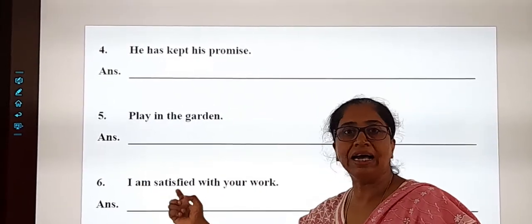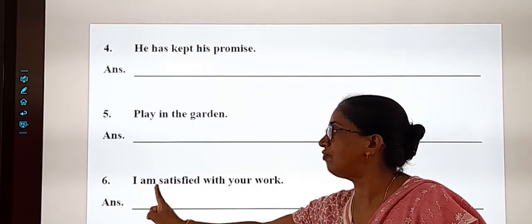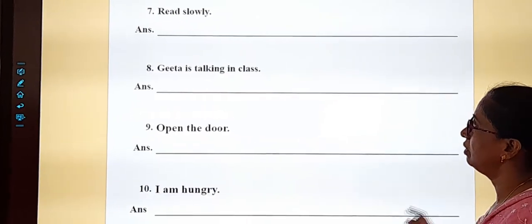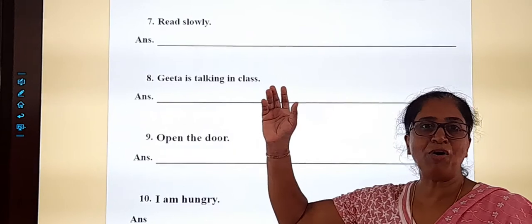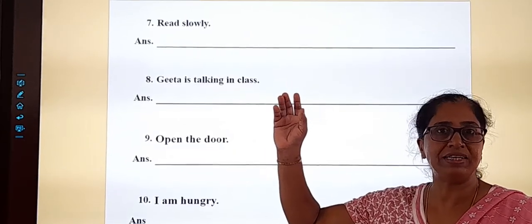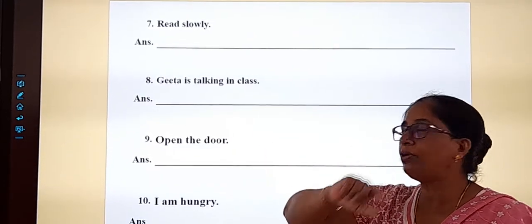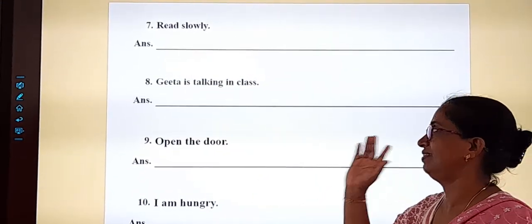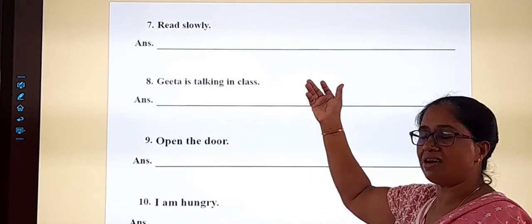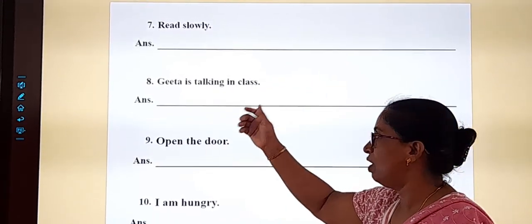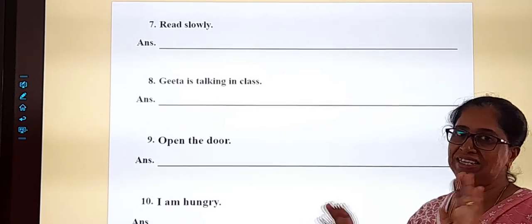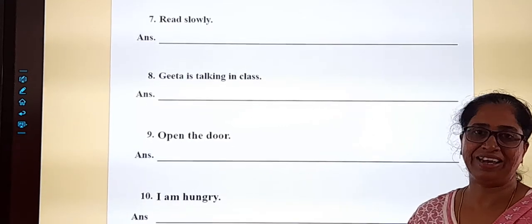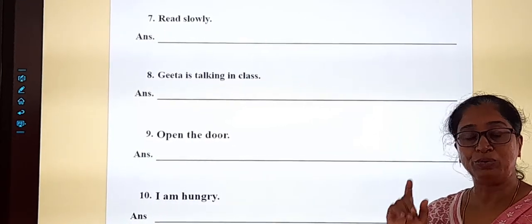'I am satisfied with your work' — there are two verbs: 'am' and 'satisfied', so use 'not' after the first verb: 'I am not satisfied with your work'. 'Read slowly' is an imperative sentence, so: 'Don't read slowly'. 'Open the door' is also an order sentence — this time I'm not giving you the answer!